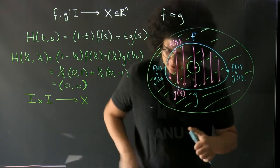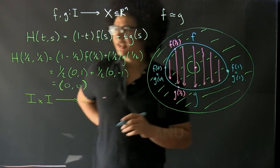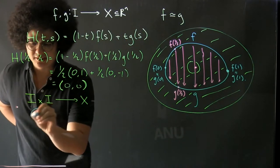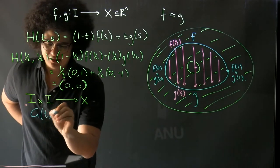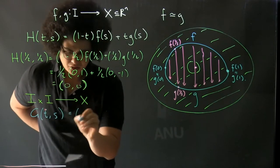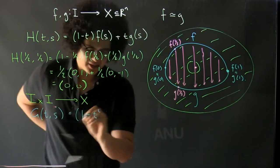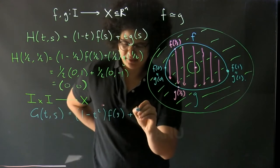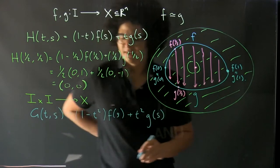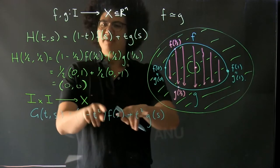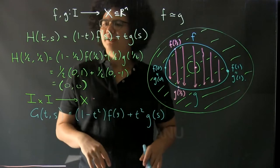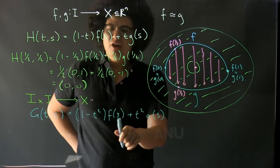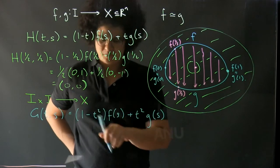Now I want to give a couple of other examples that aren't linear. So we might take G(t,s) equals (1-t²)f(s) + t²g(s). So if we have the same f and g, if this homotopy makes sense then this one should also make sense. However, it's a different homotopy of paths between two homotopic paths.